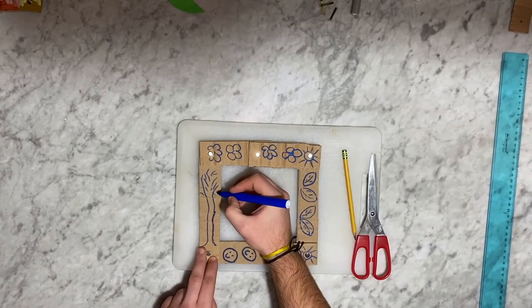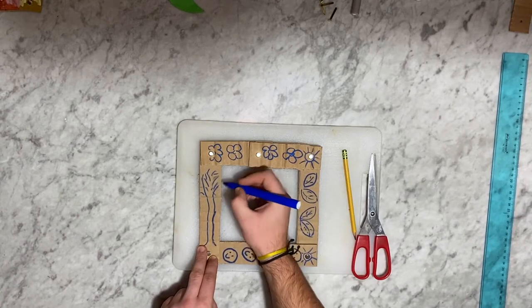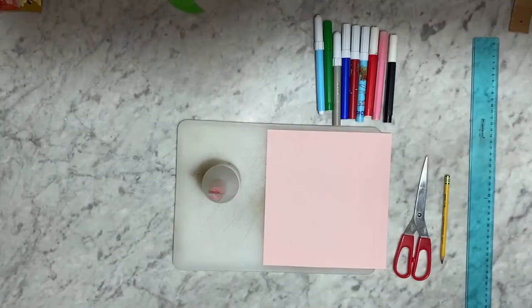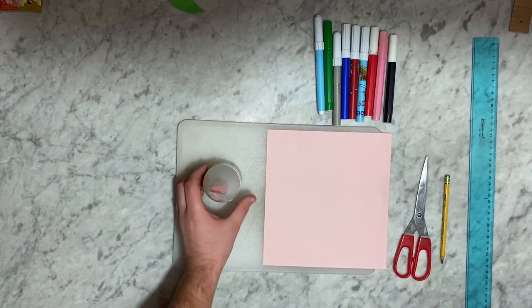We can now decorate our shapes using our imagination. To make two faces, in addition to the first materials, we'll need glue and colored sheets of paper.